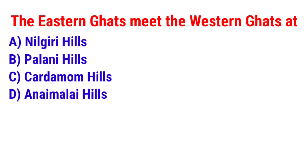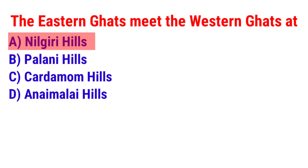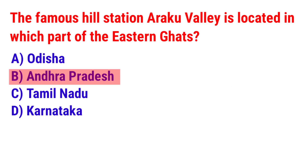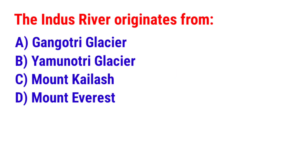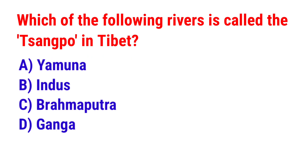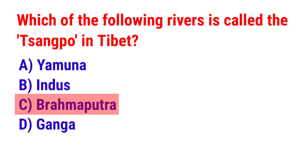Question 32: The Eastern Ghats meet the Western Ghats at? The answer is option A — Nilgiris Hills. Question 33: The famous hill station Araku Valley is located in which part of the Eastern Ghats? The answer is option B — Andhra Pradesh. Question 34: The Indus river originates from? The answer is option C — Mount Kailash. Question 35: Which of the following rivers is called the Tsangpo in Tibet? The answer is option C — Brahmaputra.